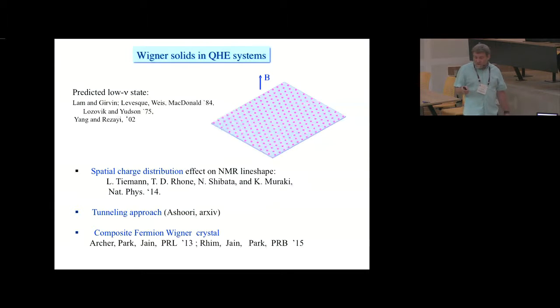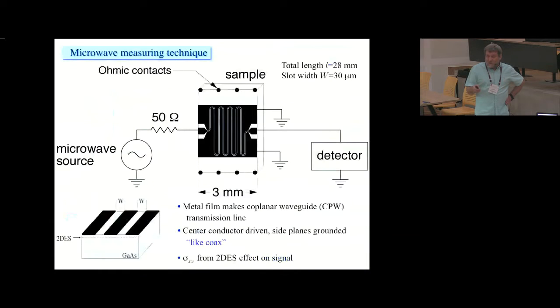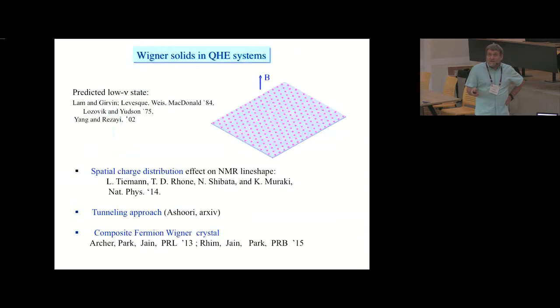The Wigner solid is indeed the predicted low filling factor state of 2D electron gas. It has been investigated for quite a long time. Wigner solids now have been seen in 2D gas by NMR, effects on line shape, but also quite recently in a tunneling approach from Ray Ashoori's group at MIT. An improved description of the Wigner crystal came from my host, Professor Jain, referring to these crystals as crystals not of electrons but as composite fermions. And I'll be talking more about that here in the talk.